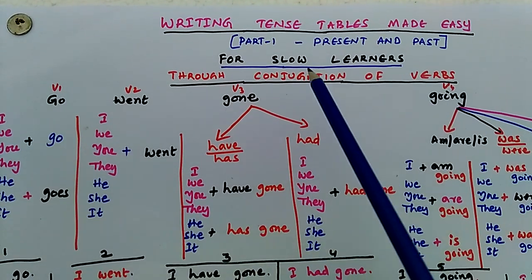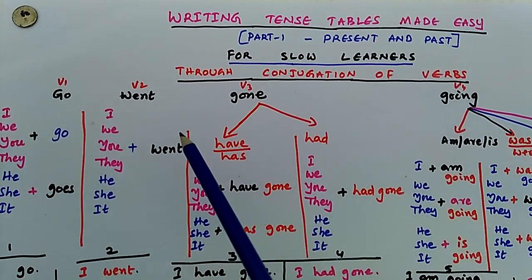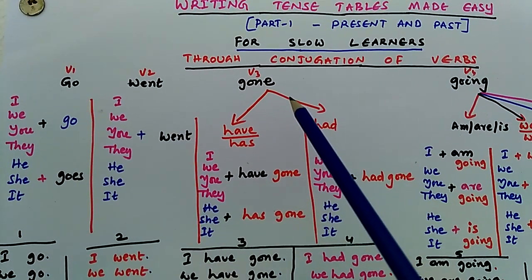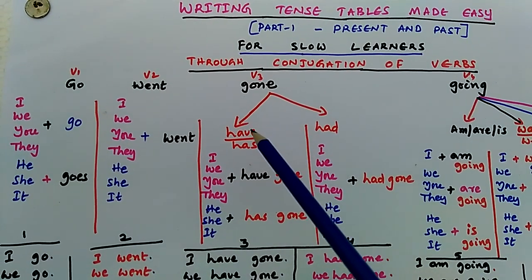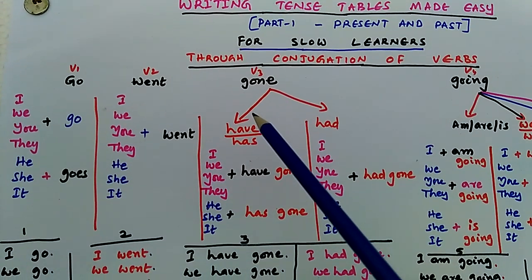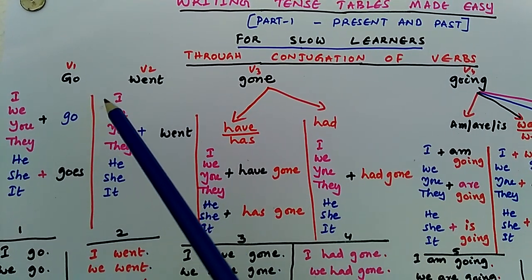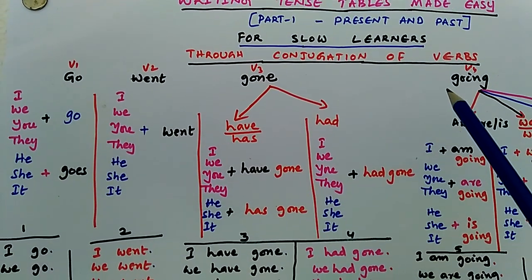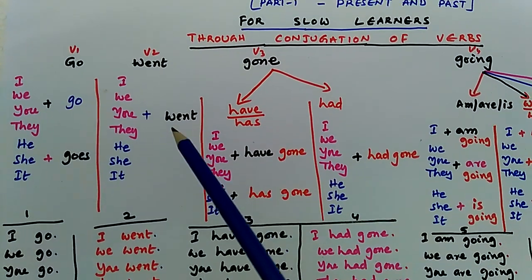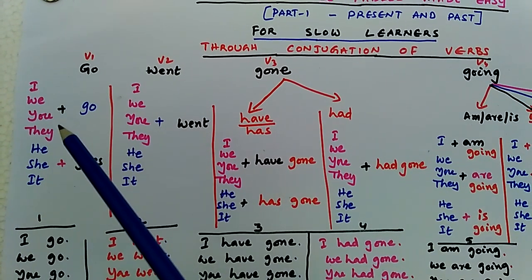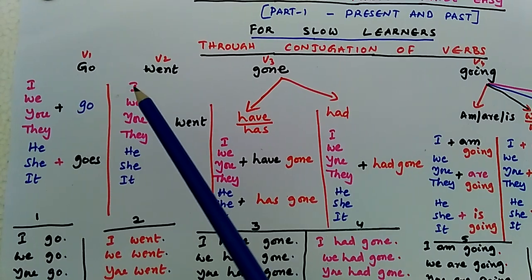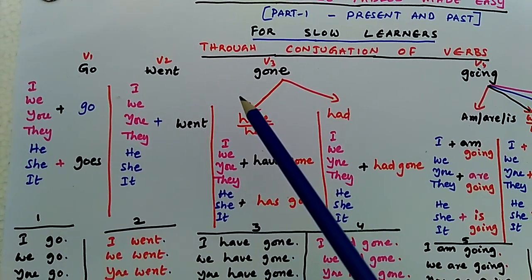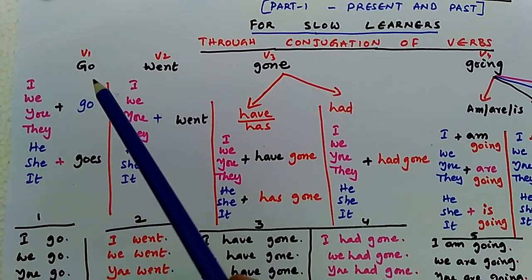Writing tense tables made easy for slow learners. If children are made to learn the conjugation of verbs, then automatically it will be very easy for us to make them learn to write the tense tables on their own. For example, let us take the conjugation of one verb, that is 'go': go, went, gone, going. By adding I, we, you, they, he, she, it to these verb forms, we can make them easily write tense tables.